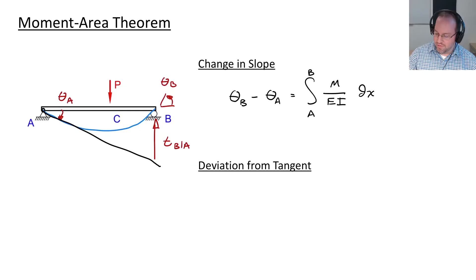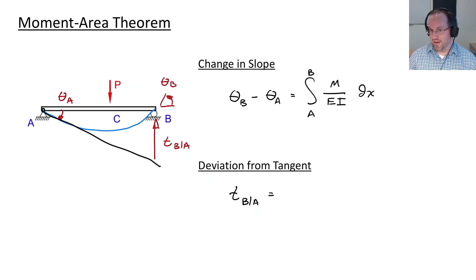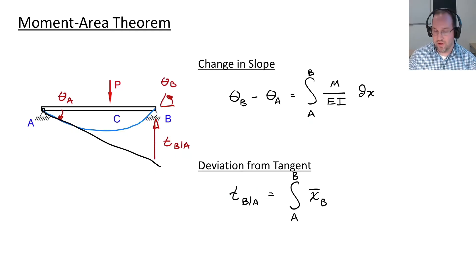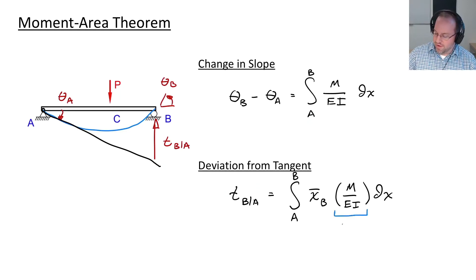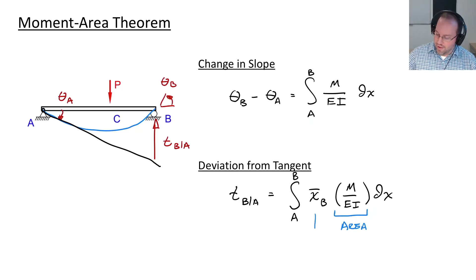We could represent this deviation with double integration, but it's more convenient to represent it as a moment of an area. We take an integral from A to B, multiply by the horizontal distance from location B, multiplied by the curvature M over EI DX. There are just two terms here: an area under the moment diagram divided by EI to convert to curvature, and XB is the distance to the centroid.